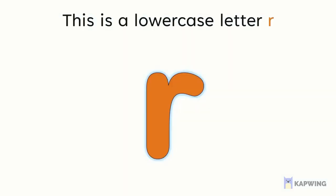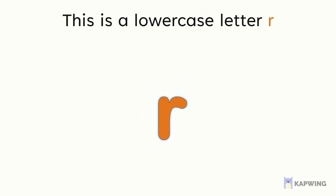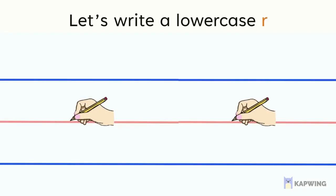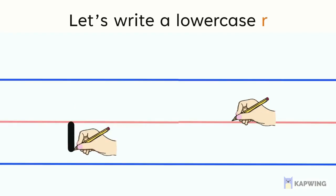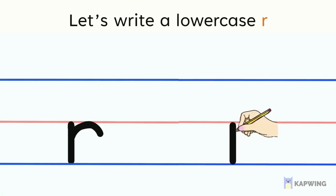This is a lowercase r. Let's write a lowercase r together. This time we're going to start at the center line, go all the way down, and then make a little arch. Let's try that one more time. Start in the middle, then all the way down, and then make a little arch. Good job!